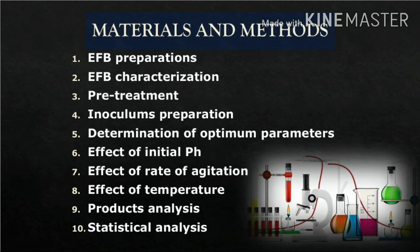Next is the determination of optimum parameters, which is to determine the effect of initial pH, the rate of agitation, and the effect of temperature on ethanol production. We then proceed with the product analysis whereby the fermentable sugar and also the ethanol concentrations of the EFB hydrolysate are determined using HPLC, which is high performance liquid chromatography. Lastly is the statistical analysis, where the materials are prepared in triplicates to determine the significant difference between the control and the experimental parameters.